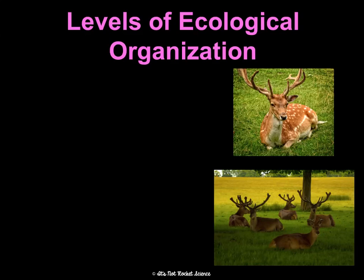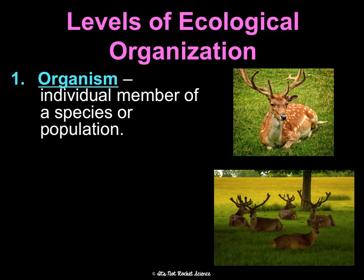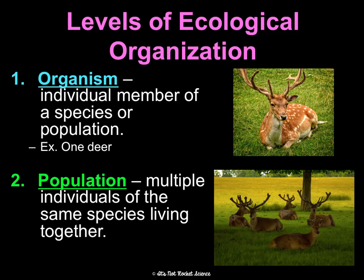Now we need language to organize the different levels of ecological organization. First is an organism — the individual member of a species, just one living thing, like one deer. The next broader level is a population — multiple individuals of the same species living together in the same place, like all the deer in one field.